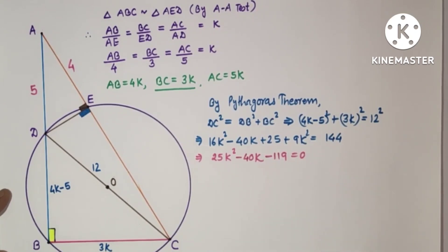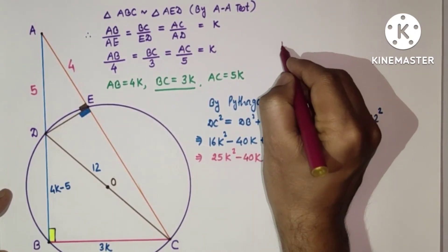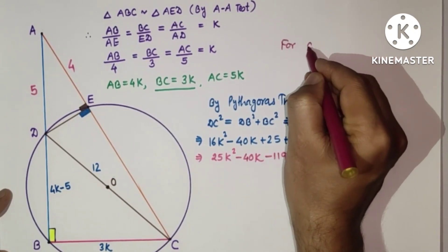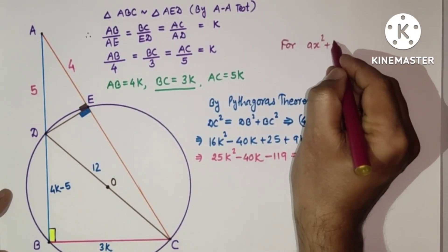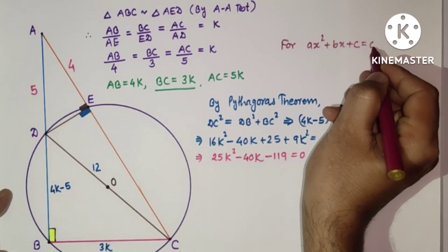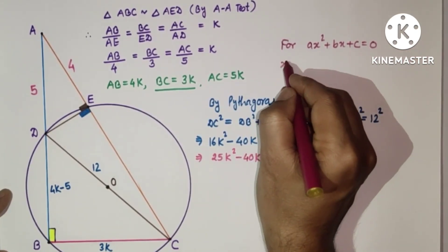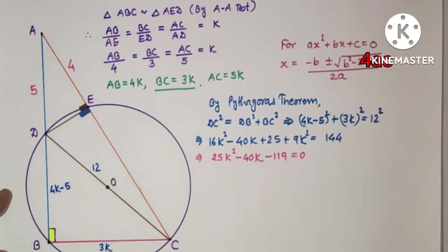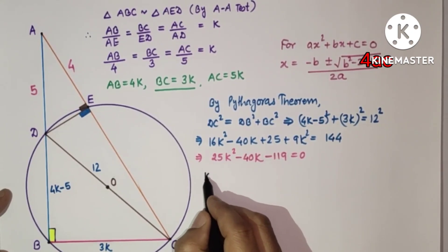Using quadratic formula, for AX square plus BX plus C equals 0, X equals minus B plus minus square root B square minus 4AC by 2A. So using this, K equals...